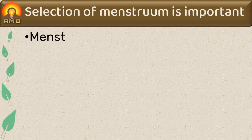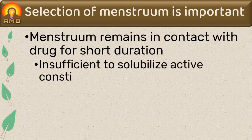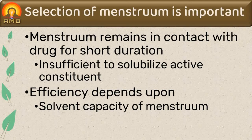As menstruum is displaced continuously in percolation, selection of menstruum is very important. In percolation, menstruum remains in contact with drug for a very short duration, which may be insufficient to solubilize the active constituents. Thus the efficiency of percolation depends upon the solvent capacity of the menstruum, hence selection of menstruum is very essential in the percolation process.